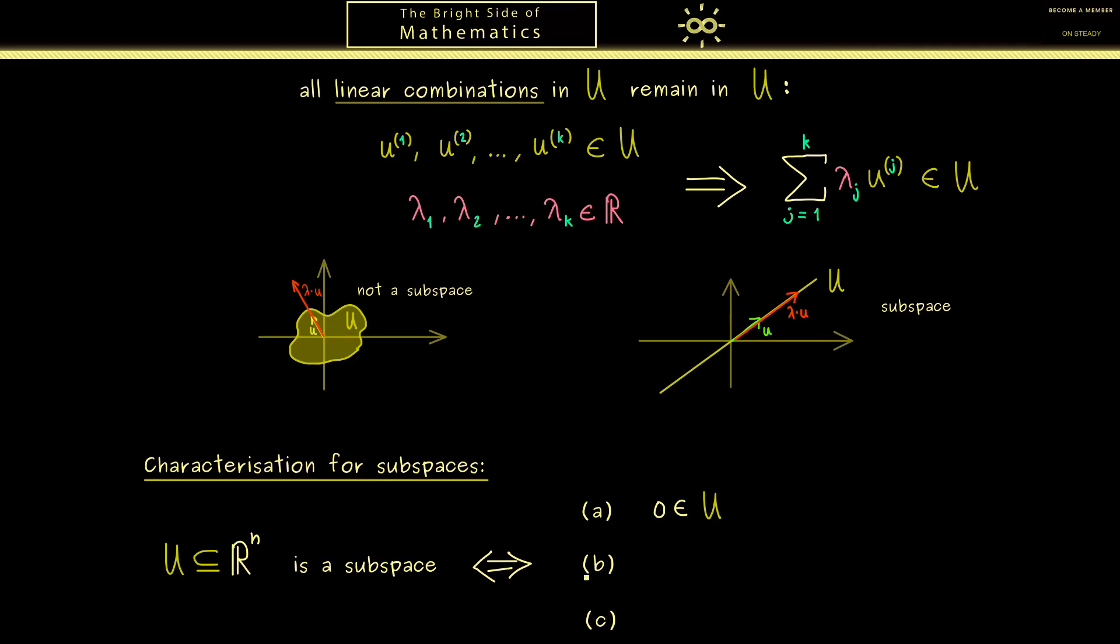Okay, then let's go to the next property which we have also already discussed, meaning we can scale vectors. More precisely if we take any vector lowercase u and any scalar λ, then we can conclude that λ times the vector u is also an element of U. Hence we cannot leave the subspace by scaling.